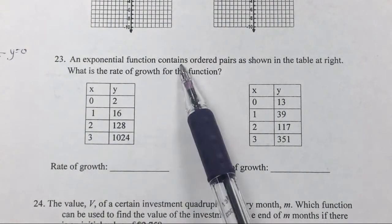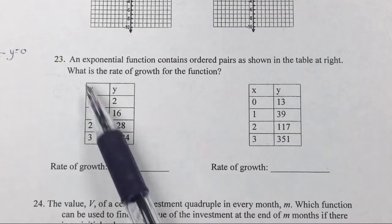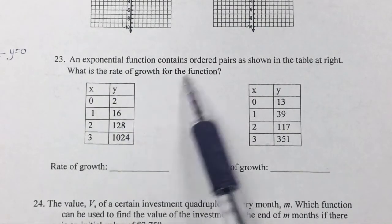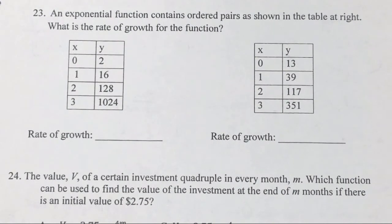All right, problem 23. The exponential function contains ordered pairs as shown in the table. At the right, well there's two of them. What is the rate of growth for the function? How do you find the rate from looking at the table?